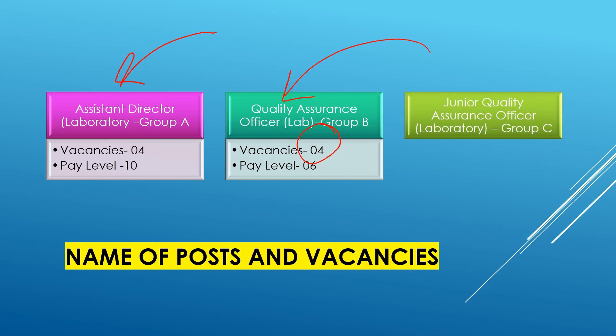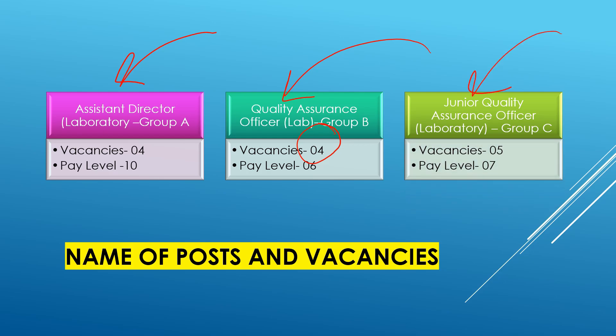The next one is Junior Quality Assurance Officer Laboratory Group C. The total number of vacancies are 5 and pay level is 7. So approximately we have 30 vacant posts in Ministry of Textile.